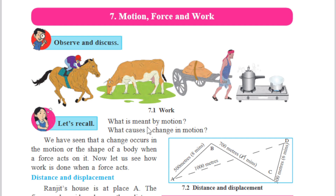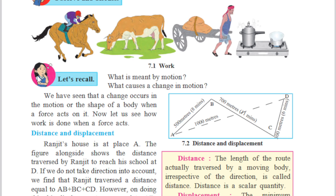So, what is meant by motion? And what causes a change in motion? We have seen that a change occurs in the motion or shape of a body when force acts on it. Now, let us see how work is done when force acts. If any force acts on a body, then the motion will change or the shape will change. Here is distance and displacement.